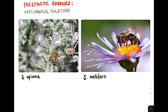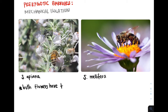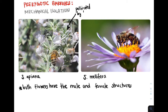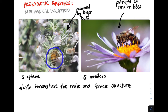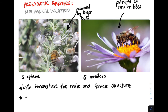Let's now look at mechanical isolation, another prezygotic barrier. We have the S. apiana flower and the S. mellifera flower. Both flowers have male and female structures — the male structure produces pollen and is called the stamen, while the female structure has the pollen receptors. Because the male structure of S. apiana is larger, it is pollinated by large bees, whereas S. mellifera is pollinated by smaller or medium-sized bees. Because of this, even if a bee from S. apiana tried to pollinate S. mellifera, it would be unsuccessful — the difference in morphology of the flowers prevents fertilization between them.